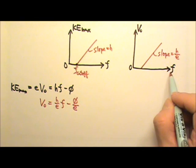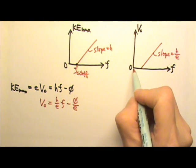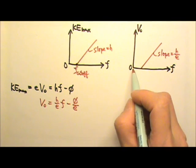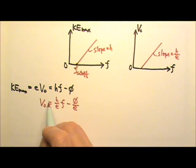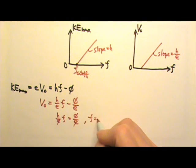And to find the X intercept, I can set the Y value, the V0 equal to 0. If this is 0, I can make these two equal: H over E times F equals to phi over E. Again, I get the frequency that is phi over H. If HF equals to phi, this must be the cutoff frequency. And again, this X intercept has to be a special frequency, so it can only be the cutoff frequency.